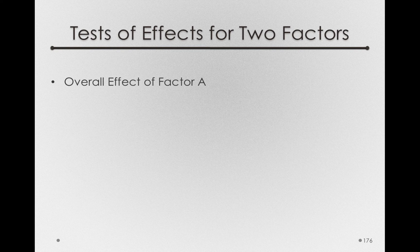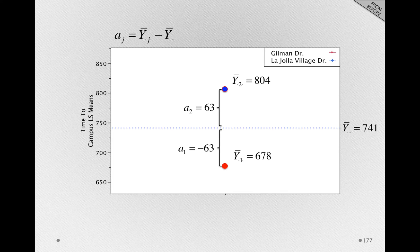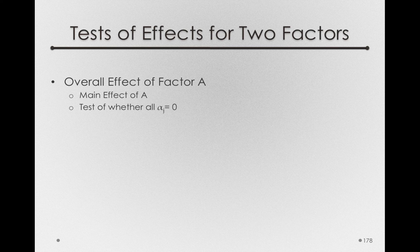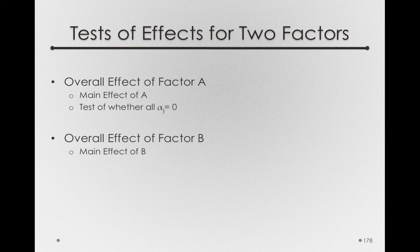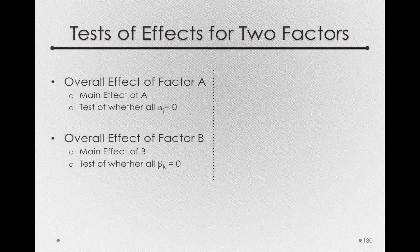We'll be testing the effects for both of our factors and the interaction in much the same way that we tested effects with the one-factor model, using the analysis of variance. The main effect of factor A will be a test of whether the alpha_j's in the population are equal to zero. On the basis of our sample we'll have a sub j's, and since they're yoked, the value of a sub 1 will be the negative of a sub 2. Similarly, the main effect of factor B — the effect of time of day — will be the test of whether the beta_k's in the population are all equal to zero. We'll have sample estimates b sub 1 and b sub 2, and the variability of those b's gives us insight into whether the population beta_k's are zero.